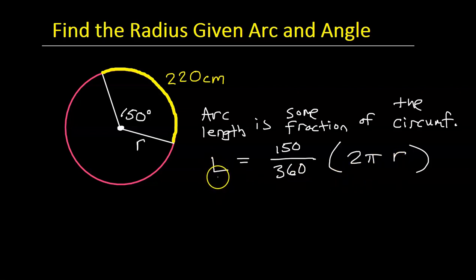So the arc length is 220 centimeters. So this will become 220 equals, we might as well reduce this. The zeros cancel each other out, or you could think of it as dividing by 10. And then we have 15 over 36. Both of these are divisible by 3. 15 divided by 3 is 5, and 36 divided by 3 is 12. So I just like smaller numbers.